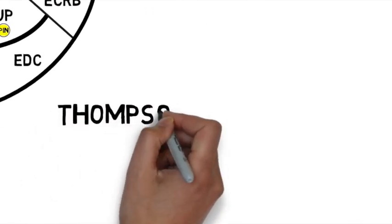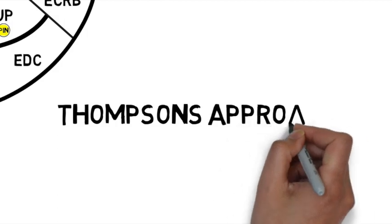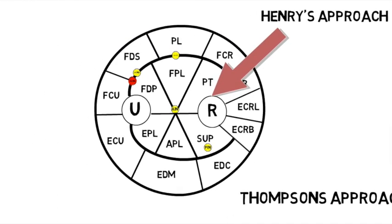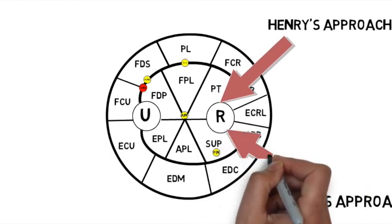Thompson approach is the dorsal approach to the radius, and this is in between the mobile wad and the muscles of the dorsum of the radius. PIN is at risk during this approach.